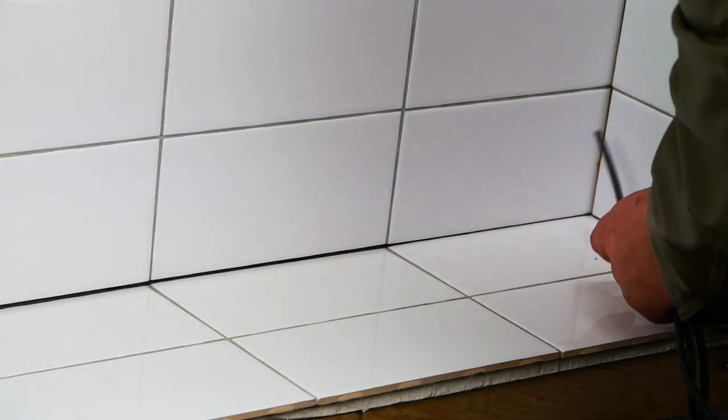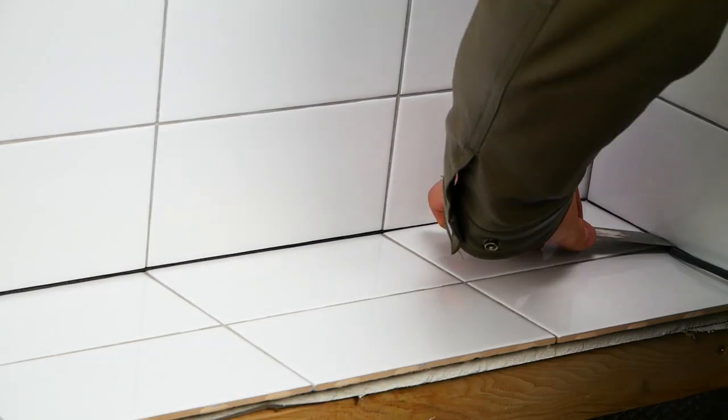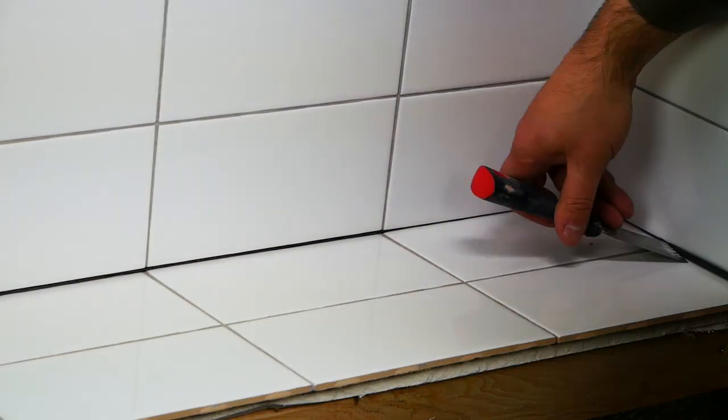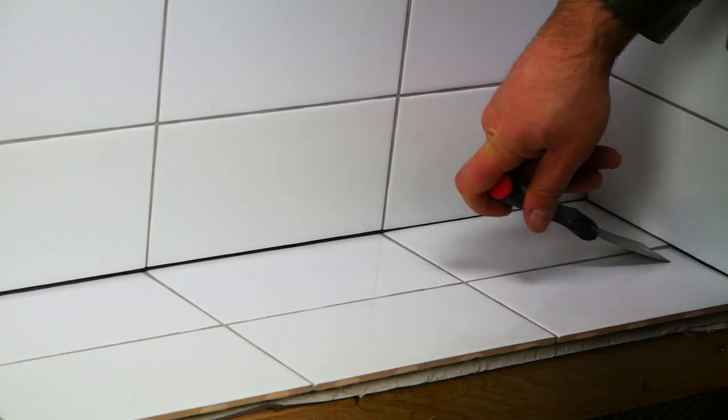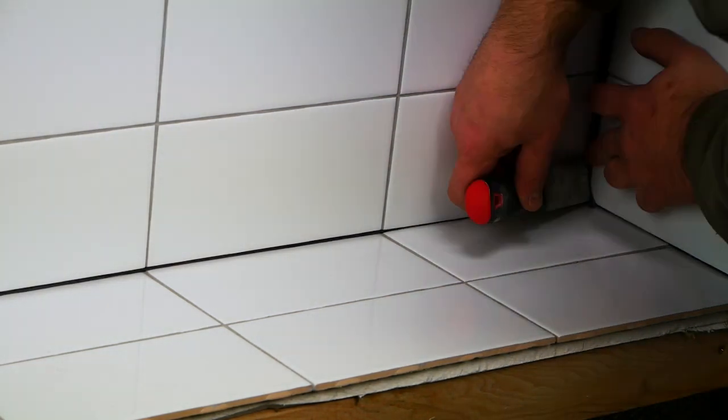You want to make sure it's all the way underneath the backer rod. You don't want it sticking out at all anywhere. Put it in any caulk joint that you're going to be going over today.